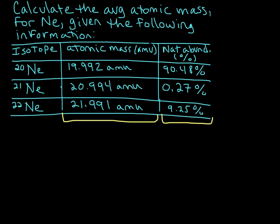What we need to do is calculate a weighted average for neon, and that'll give us the average atomic mass. If we think about this, we're going to notice that this one's going to contribute the most to our weighted average, because over 90% of the neon isotopes are this neon-20.